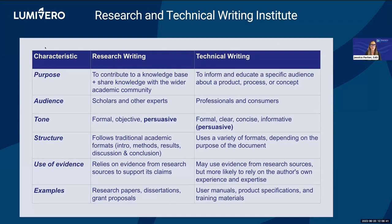Technical writing is a bit different. The purpose is usually to inform and educate a specific audience about a product, process, or concept. The audience is typically professionals and consumers. The tone is typically formal, clear, concise, and informative — and it can be persuasive. There's a variety of different structures with no single accepted standard. The evidence can come from a variety of sources, including the author's own experience and expertise. Examples include a user manual, a product specification, or training materials. Even though you might not think about it, voice is a component of technical writing.